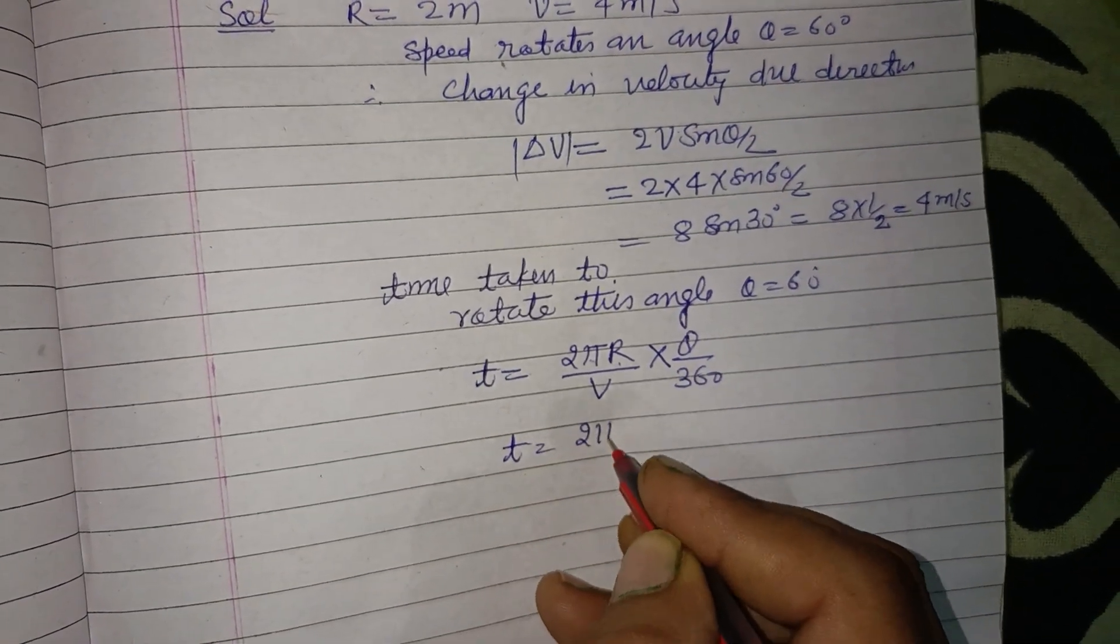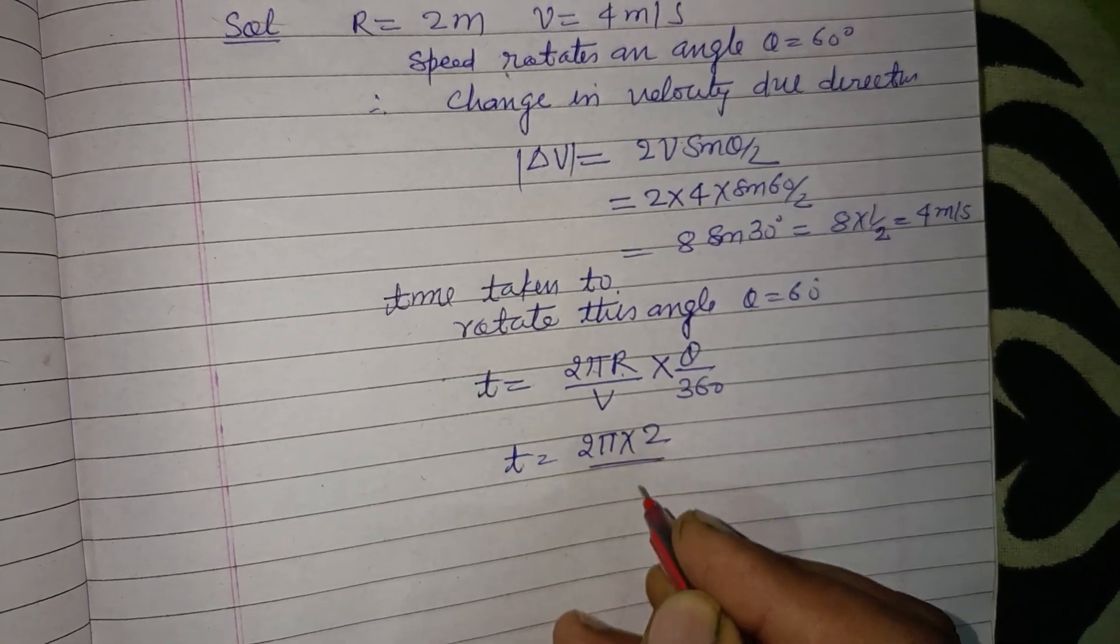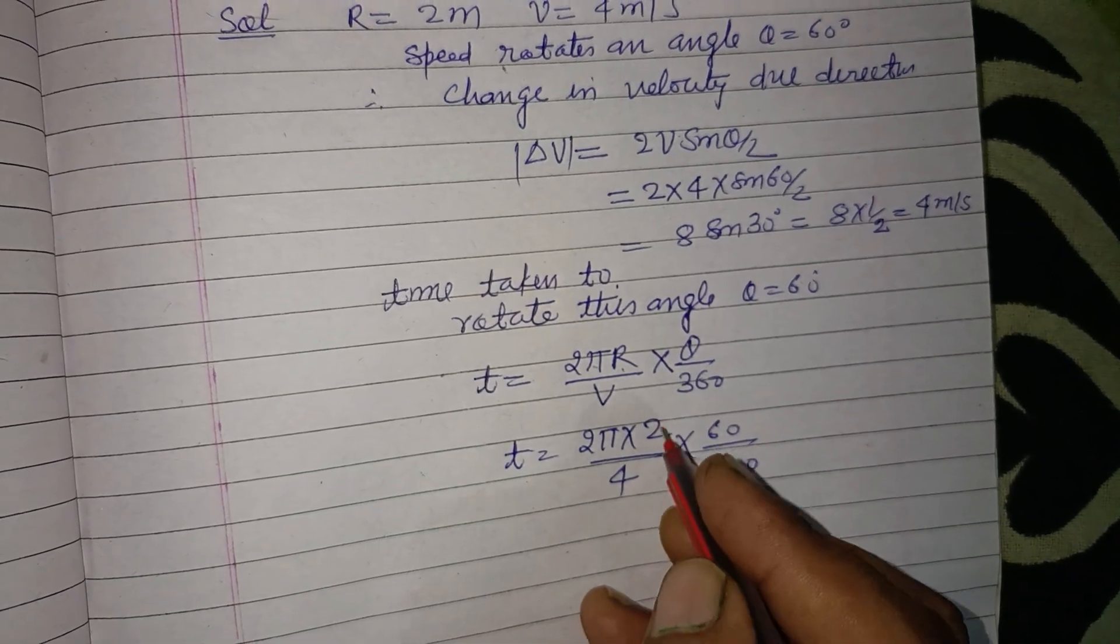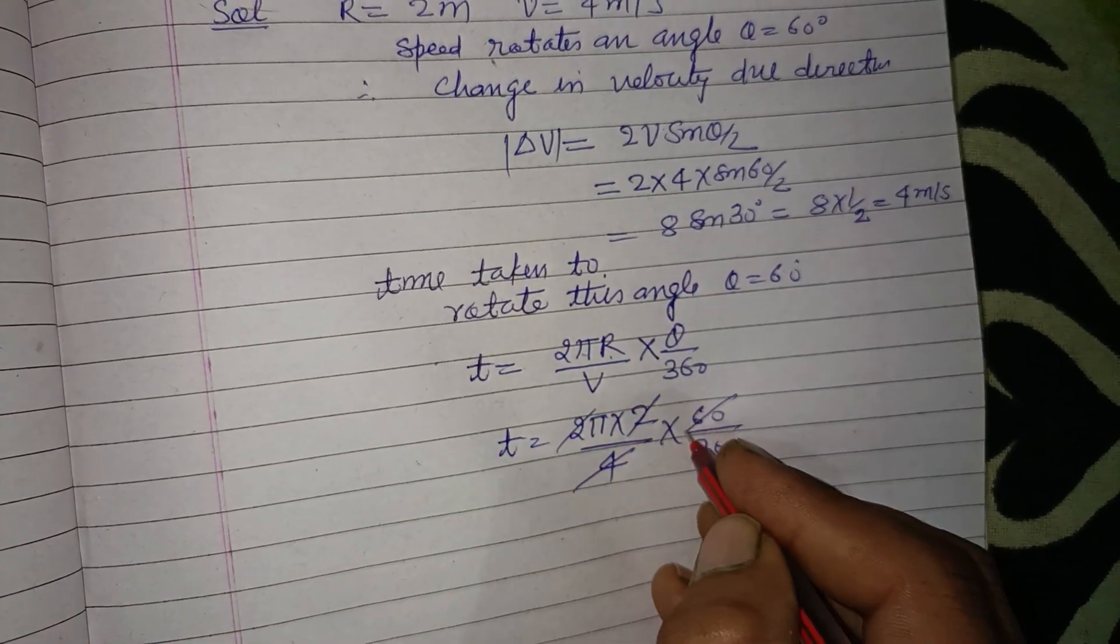T equal to 2 pi R, R is 2 upon v is 4. Theta is 60, this is 360. So 2 to 4, 4 cancel.